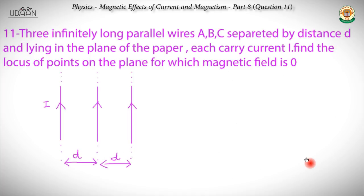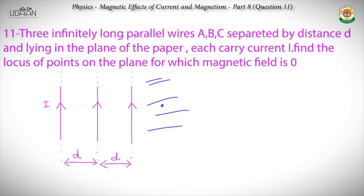We start by analyzing where to look for the particular points. These wires are all carrying current in the same direction. If we look for a point outside this arrangement, in the region away from the wires, the magnetic field due to wire A, wire B, and wire C will all be into the plane. So the field cannot be zero out there.